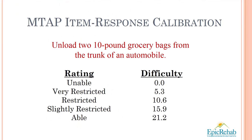The third idea in item response theory is that the difficulty level of each item and response combination can be compared to the difficulty level of every other item and response combination. Starting with unloading two 10-pound grocery bags from the trunk of an automobile, here are its difficulty levels. These are not the actual numbers we use because those are trade secrets, but they've been carefully checked and are part of our peer-reviewed research. The person who's able to do this with no restriction has a minimum ability score equivalent to the full difficulty score for ABLE — in this case, 21.2.